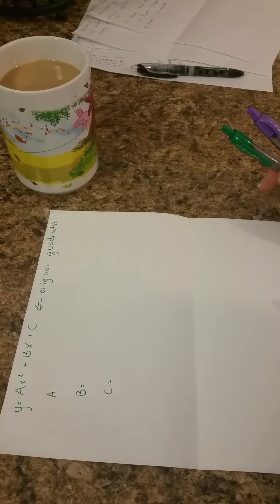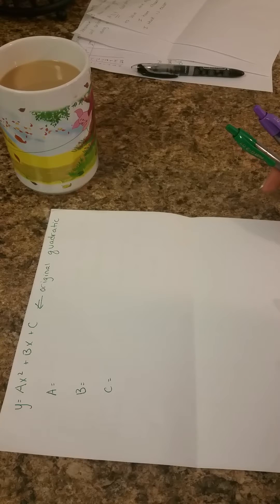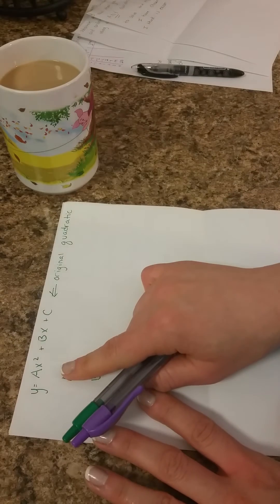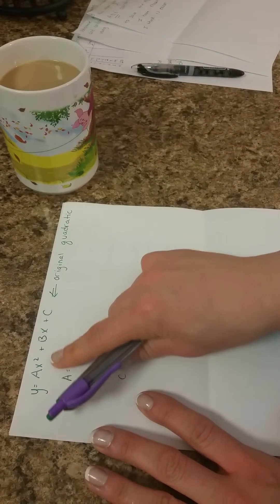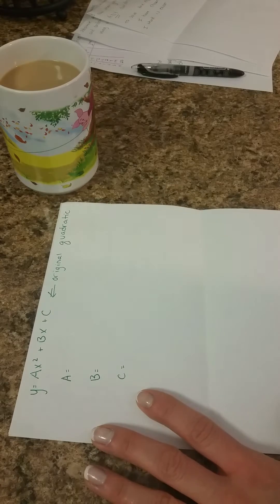My plan was to show it this afternoon in our reteach session, but that's obviously not going to happen with our snowless snow day. So what I want you to do is in your notes, just write out y equals Ax squared plus Bx plus C, which is our original quadratic.